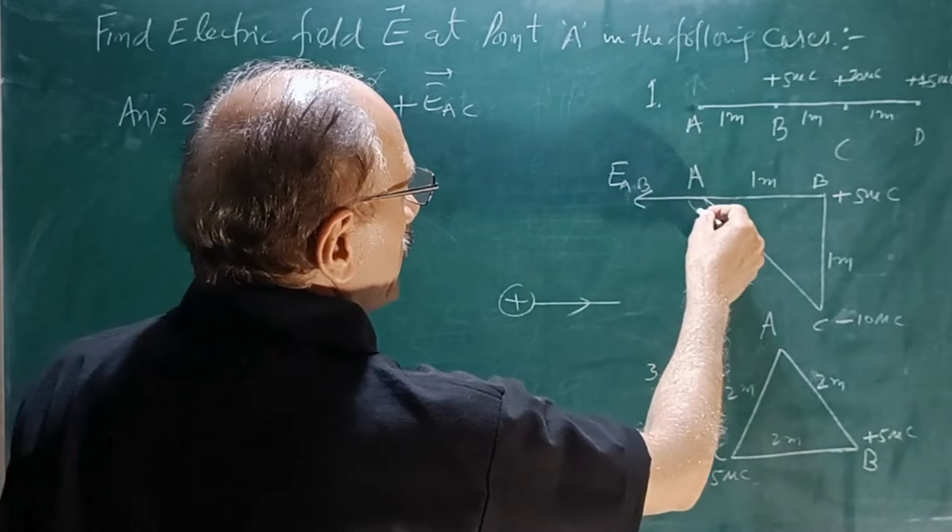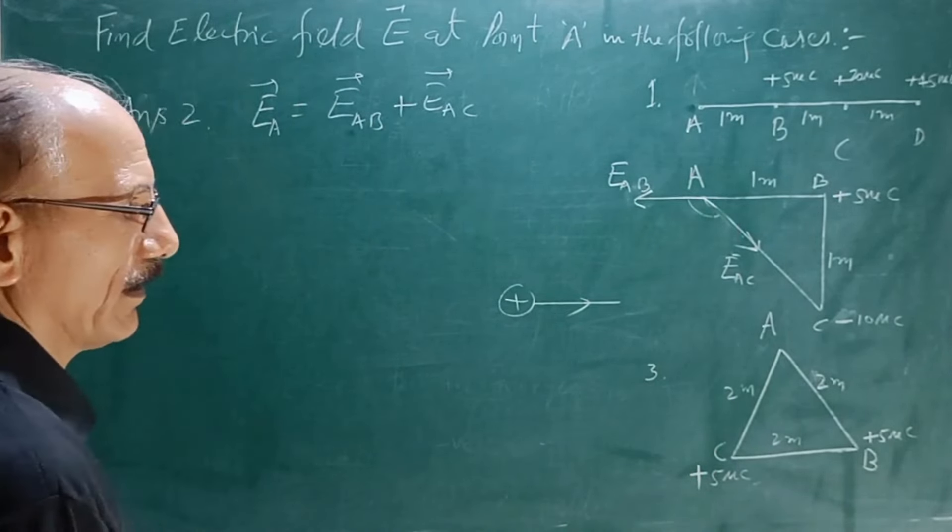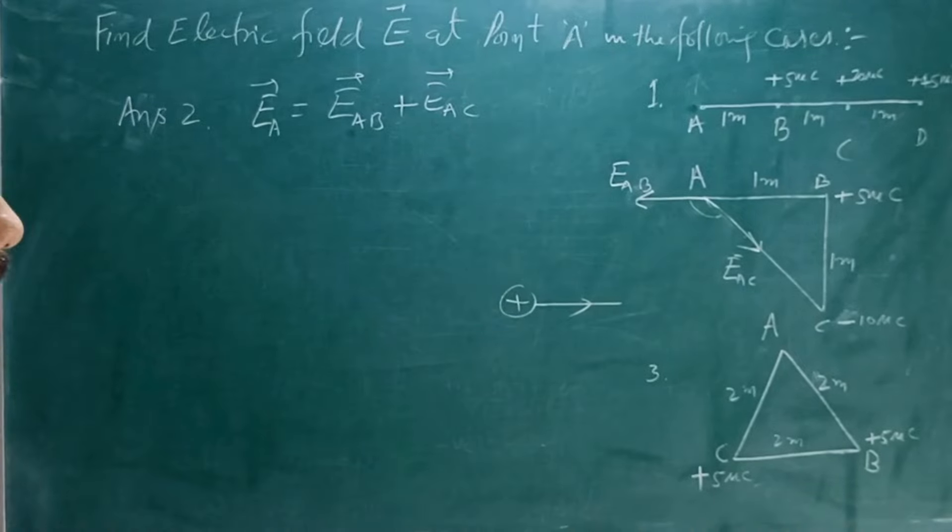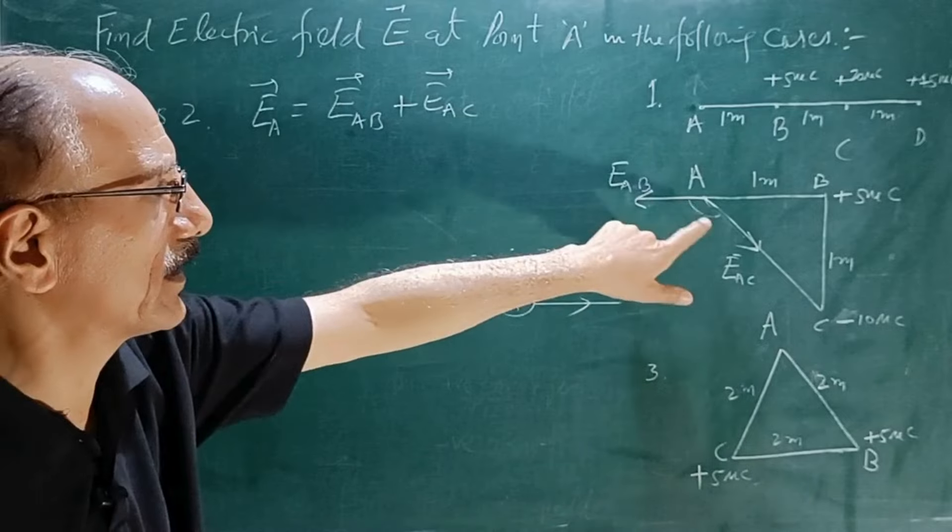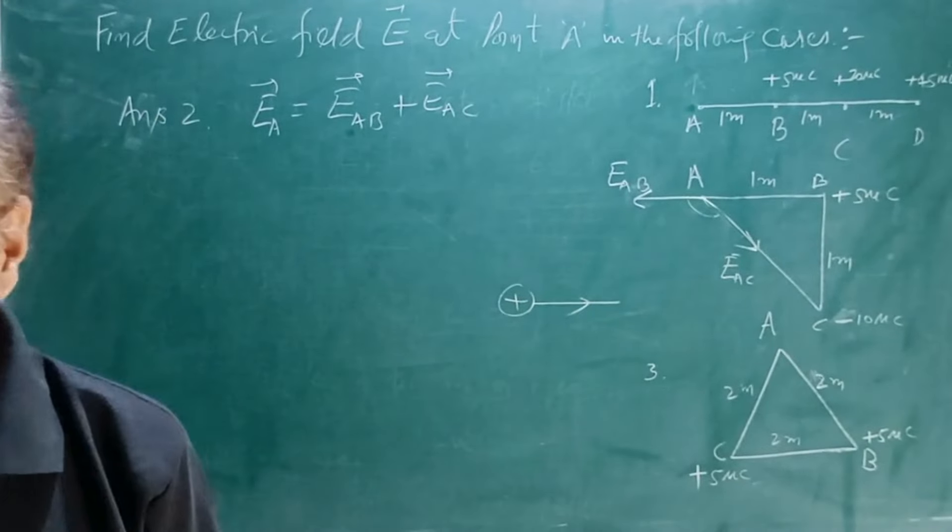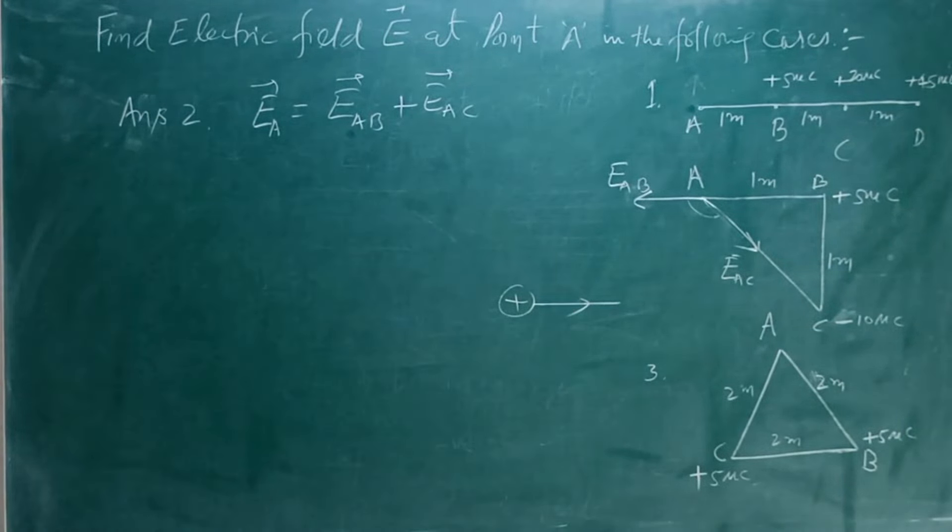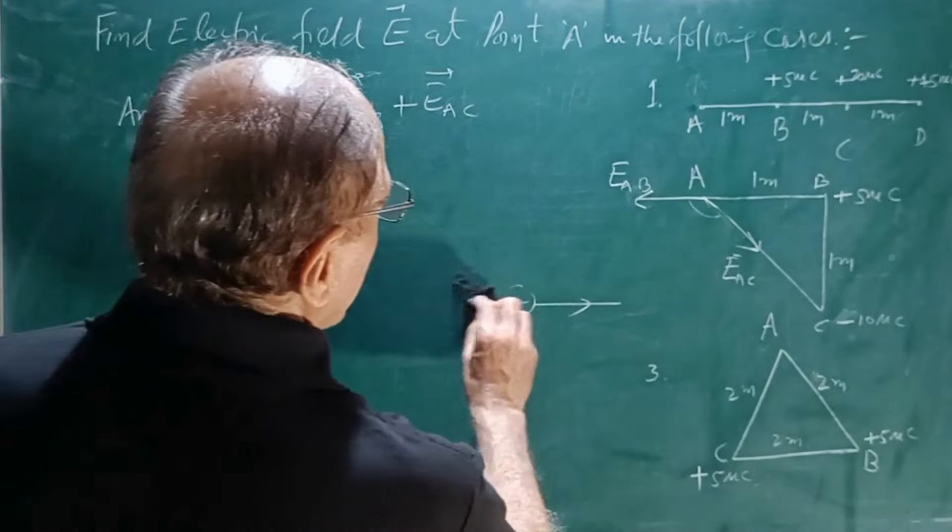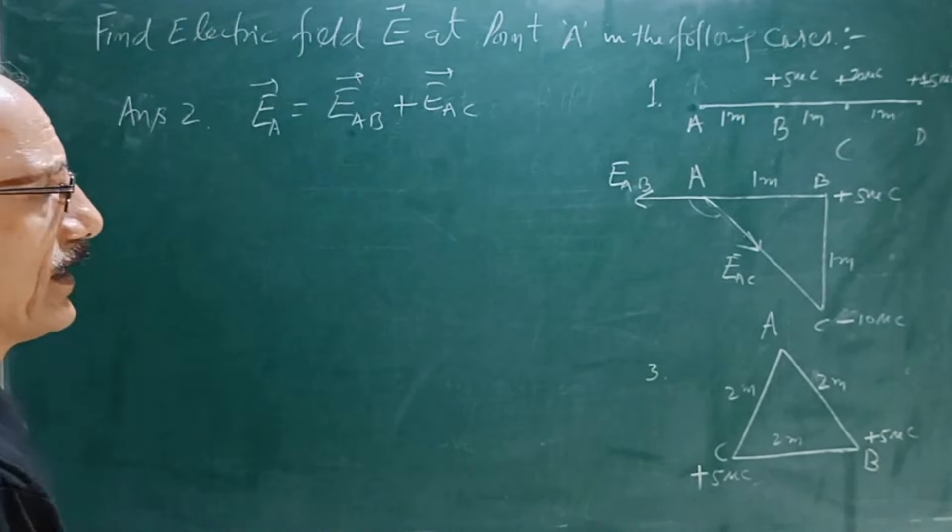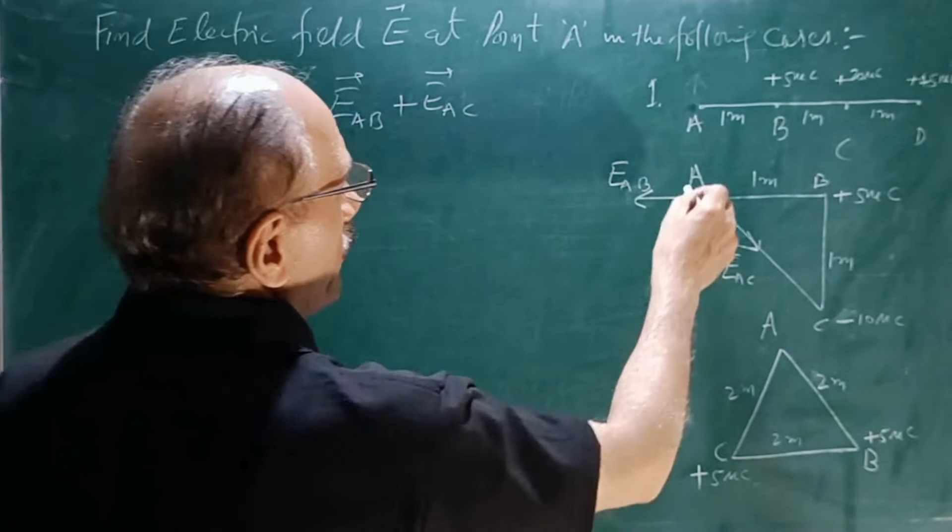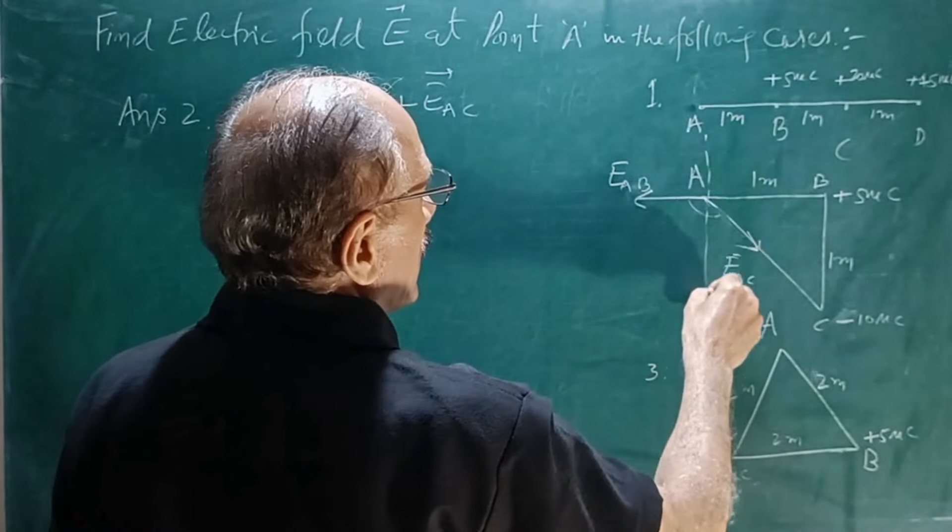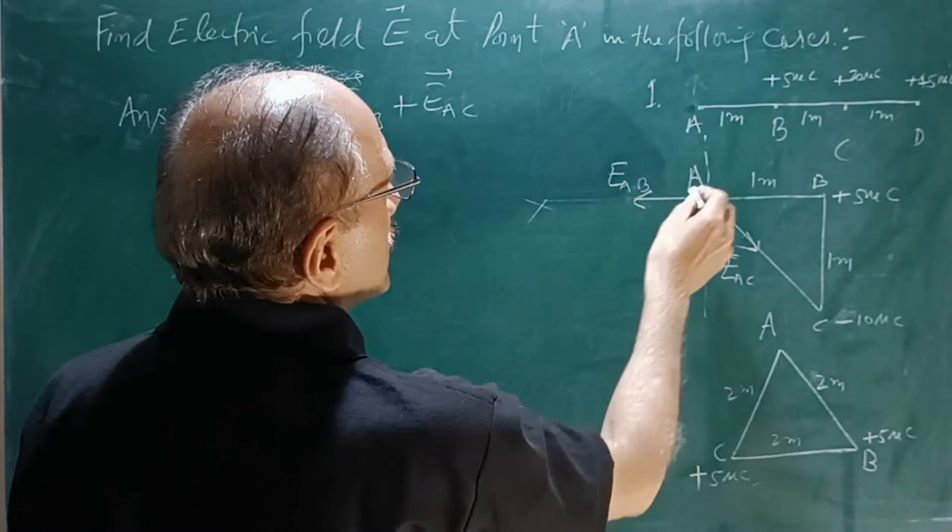What will be the angle between these two? Now to find out this resultant, you can use parallelogram law or best way - I already told you previously that resolve them and try to find out the resultant. So if we decide the axis, this is X axis and this is Y axis.